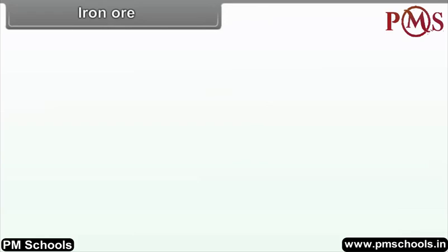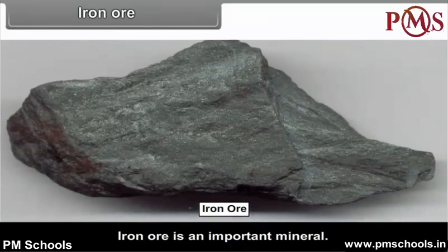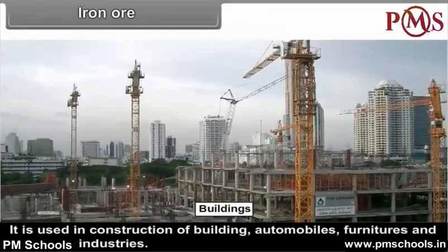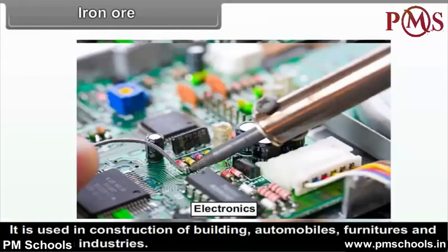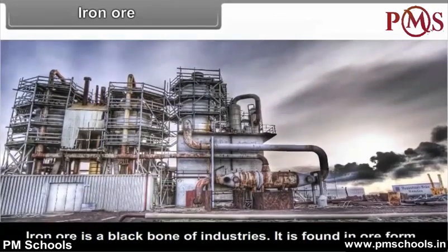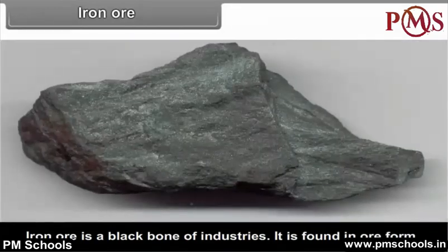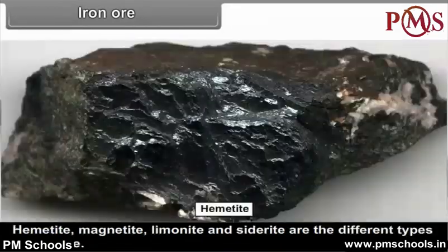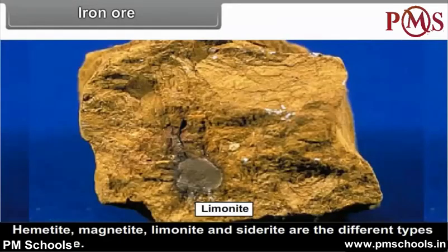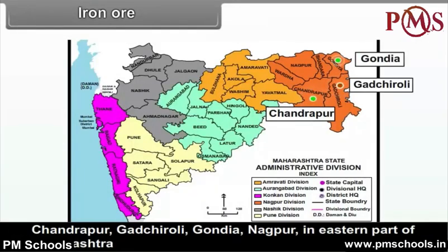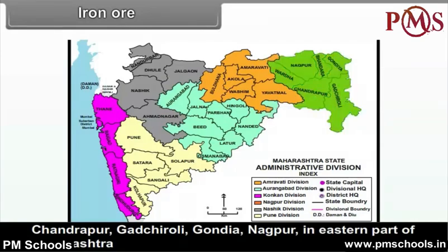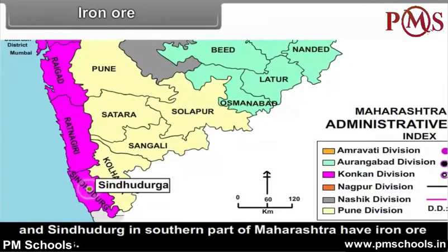Iron Ore. Iron ore is an important mineral used in construction of buildings, automobiles, furniture and electronic industries. Iron ore is a backbone of the industries. It is found in ore form. Hematite, magnetite, limonite and siderite are the different types of iron ore. Chandrapur, Gadchiroli, Gondiya, Nagpur in eastern Maharashtra and Sindhudurg in southern Maharashtra have iron ore deposits.